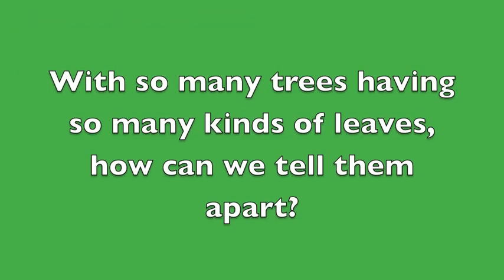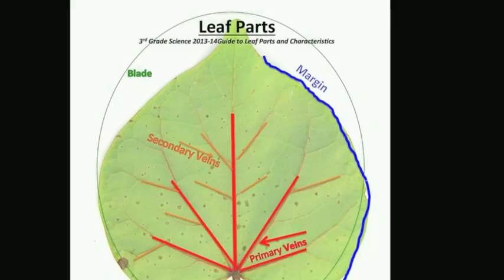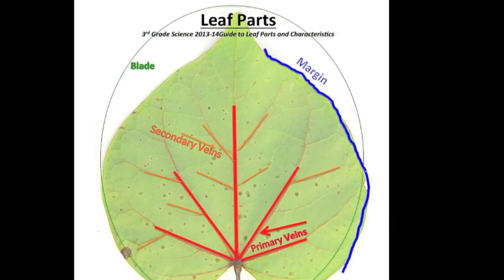With so many trees having so many kinds of leaves, how can we tell them apart?